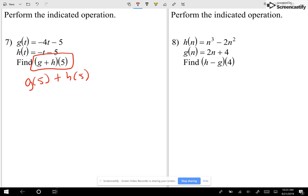First of all, let's find out what's g of 5. g of 5, I'm going to do it up here. g of 5 is negative 4 times 5 minus 5, which is negative 20 minus 5. We're going to say that's negative 25. g of 5 is negative 25.